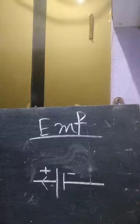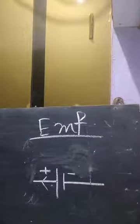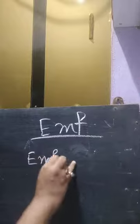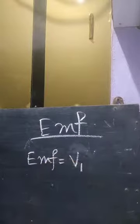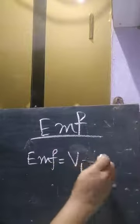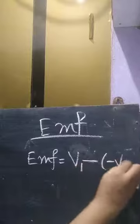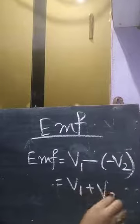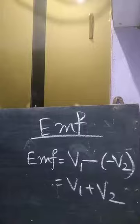The mathematical representation of EMF will be: E = V₁ minus (−V₂), which gives E = V₁ + V₂.